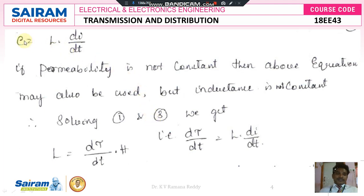If we consider E is equal to L into dI by dt, where E is the induced voltage, L is the constant, and I is the current which changes with respect to time. If the permeability is constant — because in most cases permeability is constant — but in some cases where permeability is not constant, the above equation may also be used, but inductance L is not constant; it is variable.